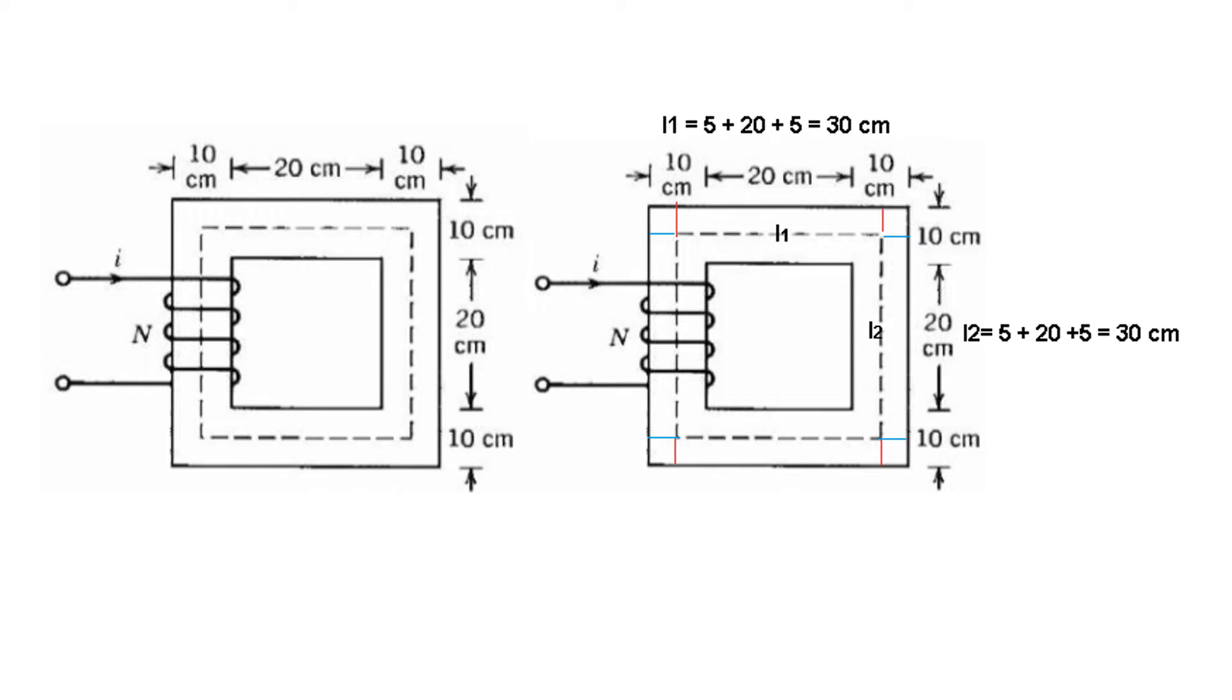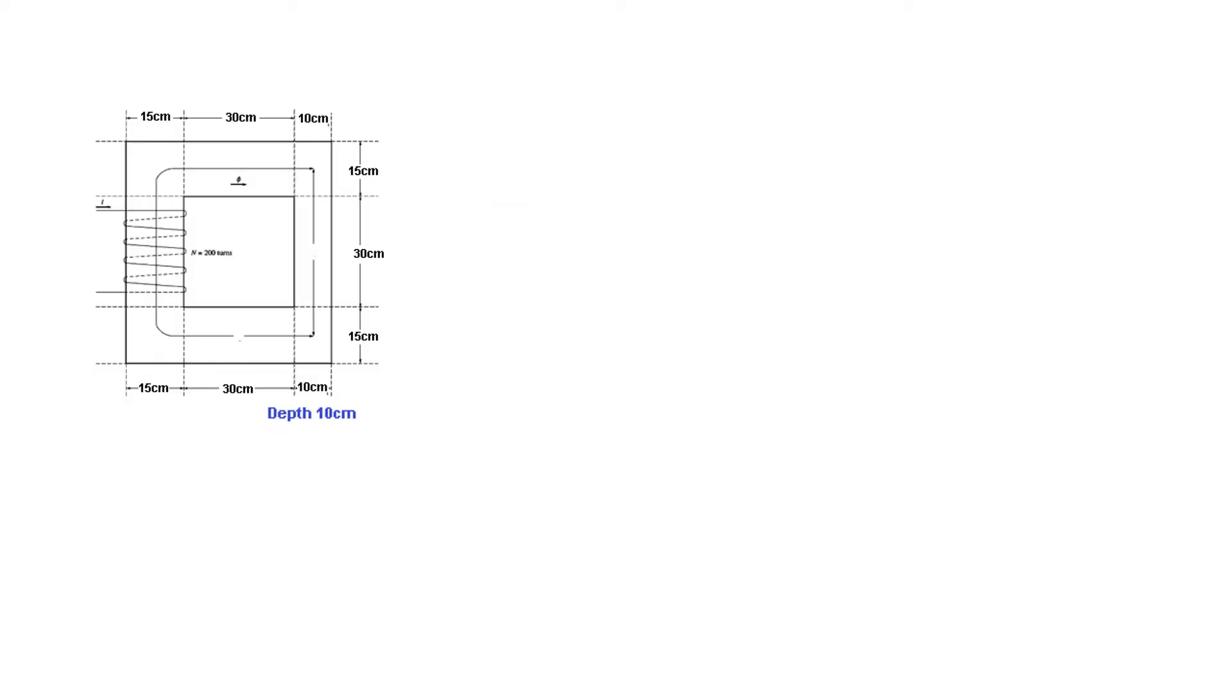And similarly L2, half of this portion - now this is also 10, so half of 10 is 5, then 20 centimeter, and then half of 10 is 5, so this is also 30 centimeter. And the same way we can calculate these two sides also. So this is easy.